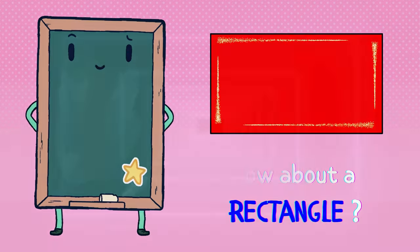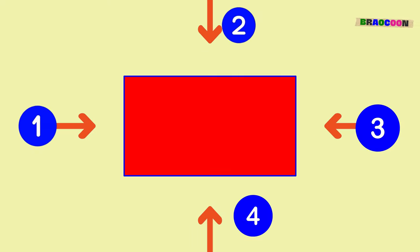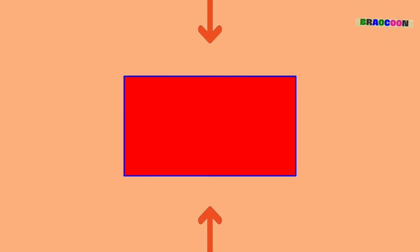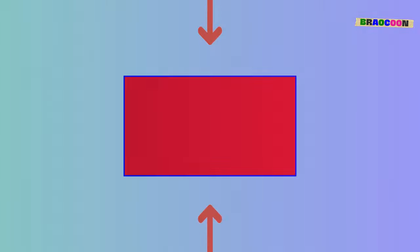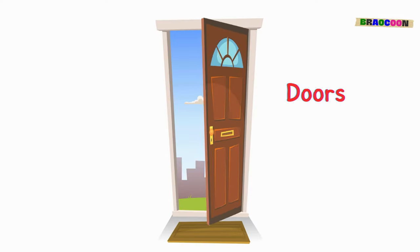How about a rectangle? A rectangle is a shape with four sides, where only the opposite sides are the same length, and all four corners are right angles. It resembles a stretched square, with two sides longer than the other two. Some common objects with rectangular shapes include doors and smartphone screens.